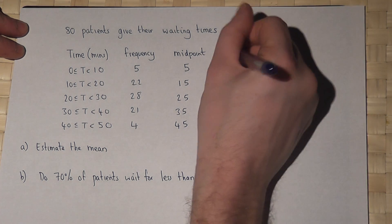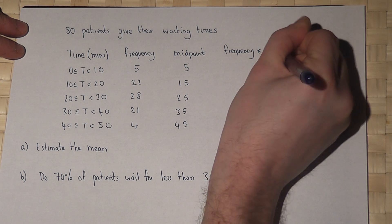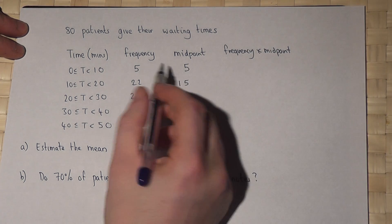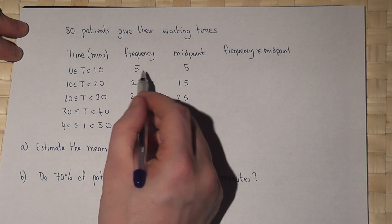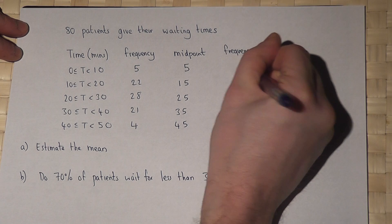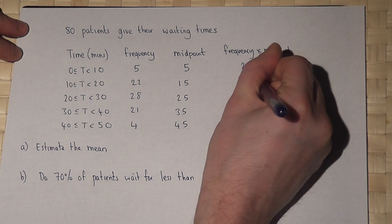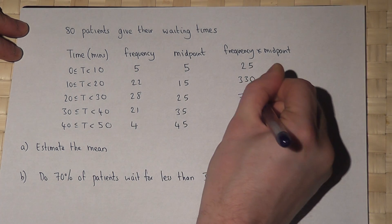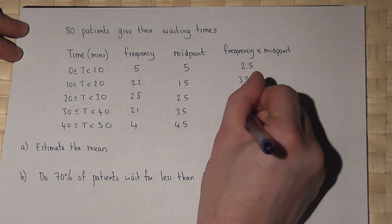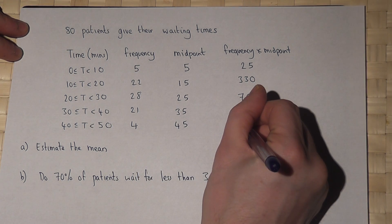The next thing we do is work out frequency times midpoint because five people took around five minutes to see the doctor. So we do 5 times 5 is 25, we do 22 times 15 which is 330, 28 times 25 which is 700, 21 times 35 is 735 and 4 times 45 is 180.